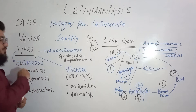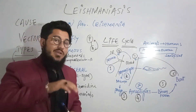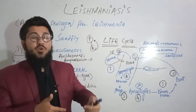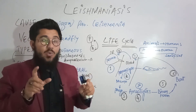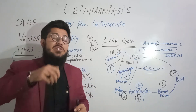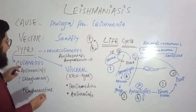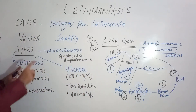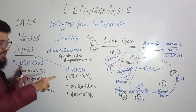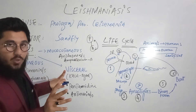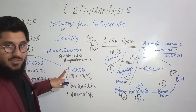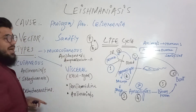Now let's come towards the types. As mentioned, Leishmaniasis affects the skin, mucous membrane, spleen, liver, and bone marrow. These sites are placed into three different categories, giving three types of Leishmaniasis. Number one: affecting the skin is named cutaneous Leishmaniasis. Affecting the mucous membrane is named mucocutaneous Leishmaniasis. And affecting the liver, spleen, and bone marrow is visceral Leishmaniasis. These are the three types of Leishmaniasis.